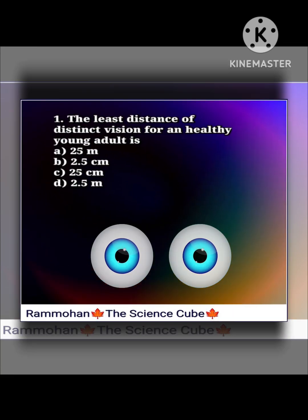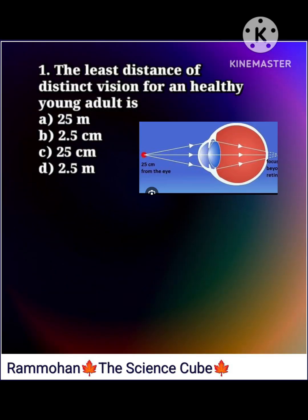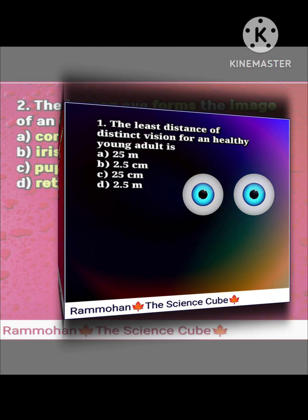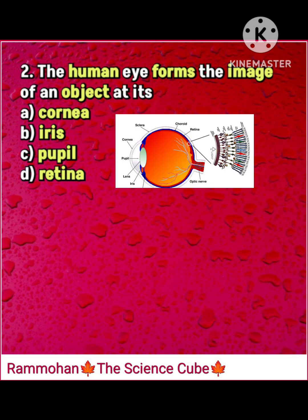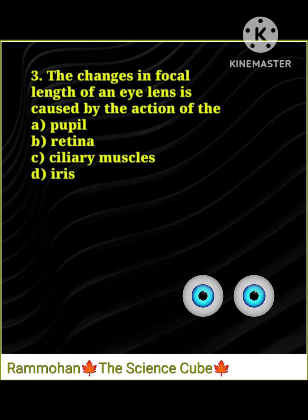First question: the least distance of distinct vision for a healthy young adult is 25 centimeters. Second question: the human eye forms the image of an object at its retina.